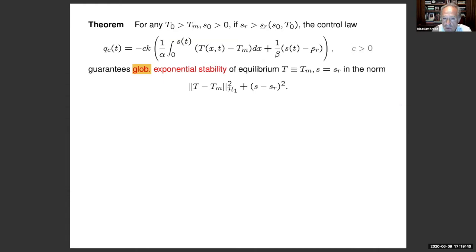What does this control guarantee? The control guarantees exponential stability in the H1 norm. And this exponential stability is not merely local. It's actually global in the H1 space of temperature profiles above melting. In other words, this holds for all initial temperature profiles where the entire liquid temperature is in the liquid range, namely above melting.